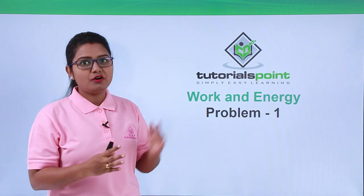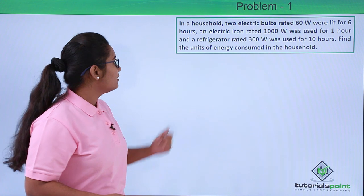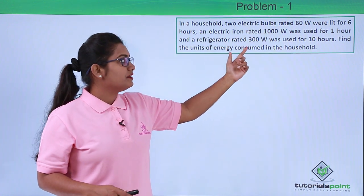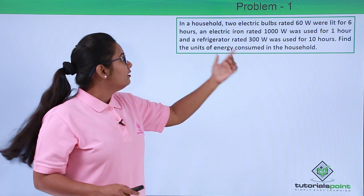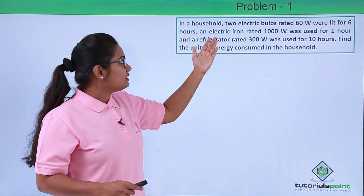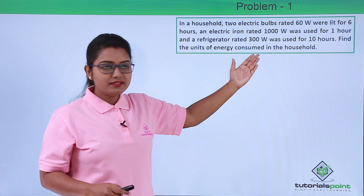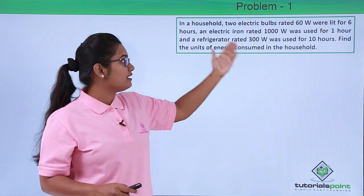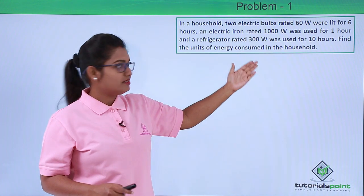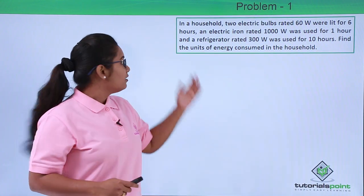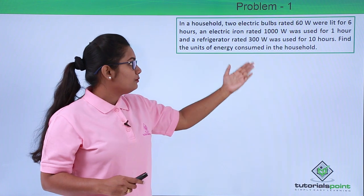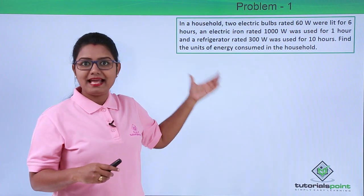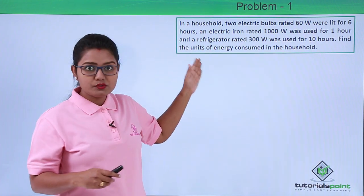Here is one of those problems: In a household, two electric bulbs rated 60 watts were lit for six hours, an electric iron rated 1000 watts was used for one hour, and a refrigerator rated 300 watts was used for ten hours. Find the units of energy consumed in the household.